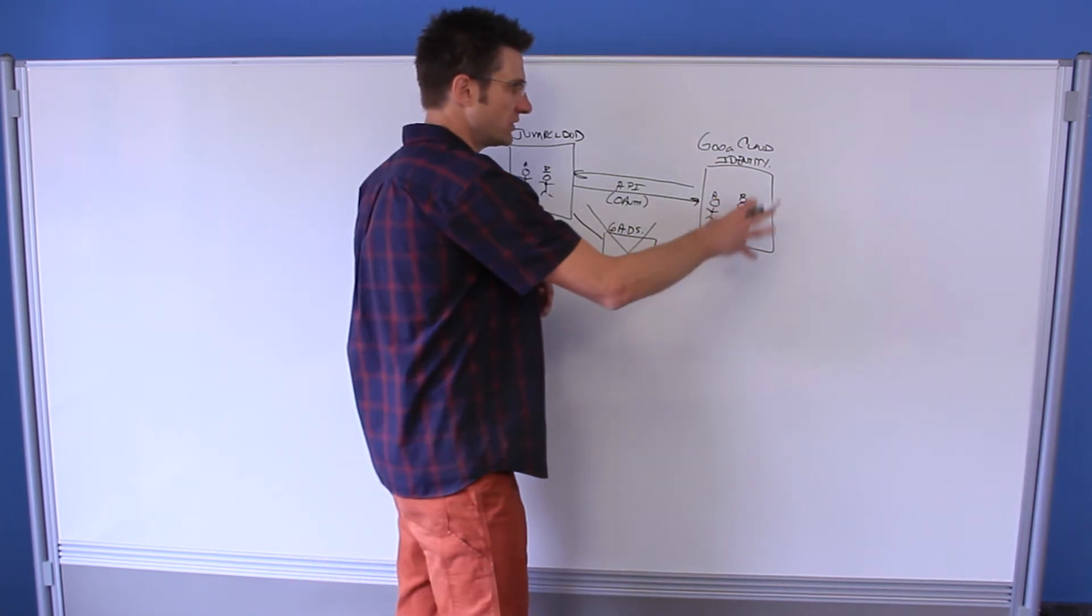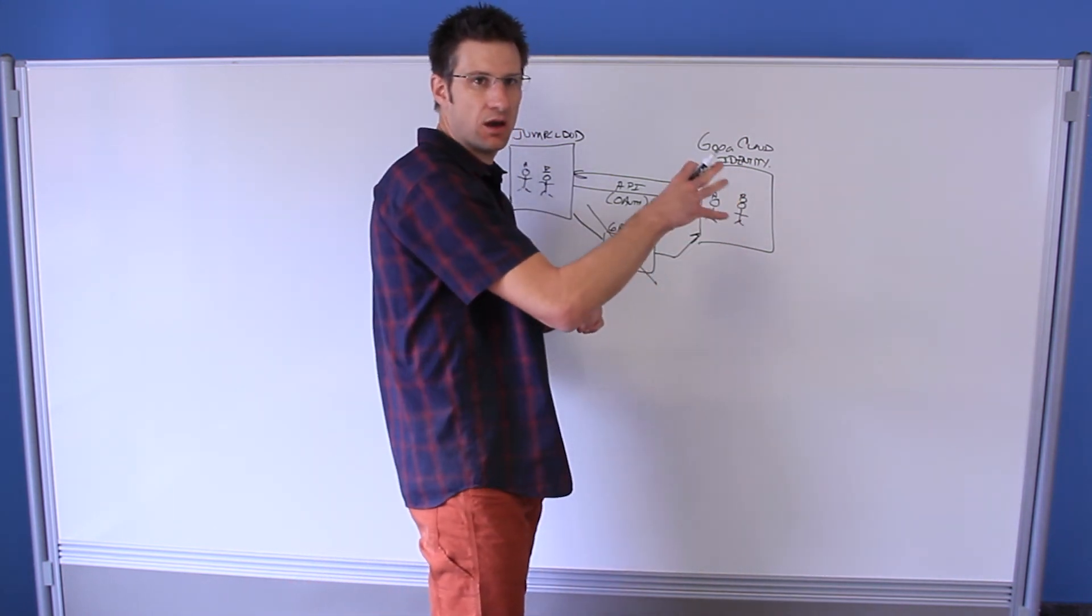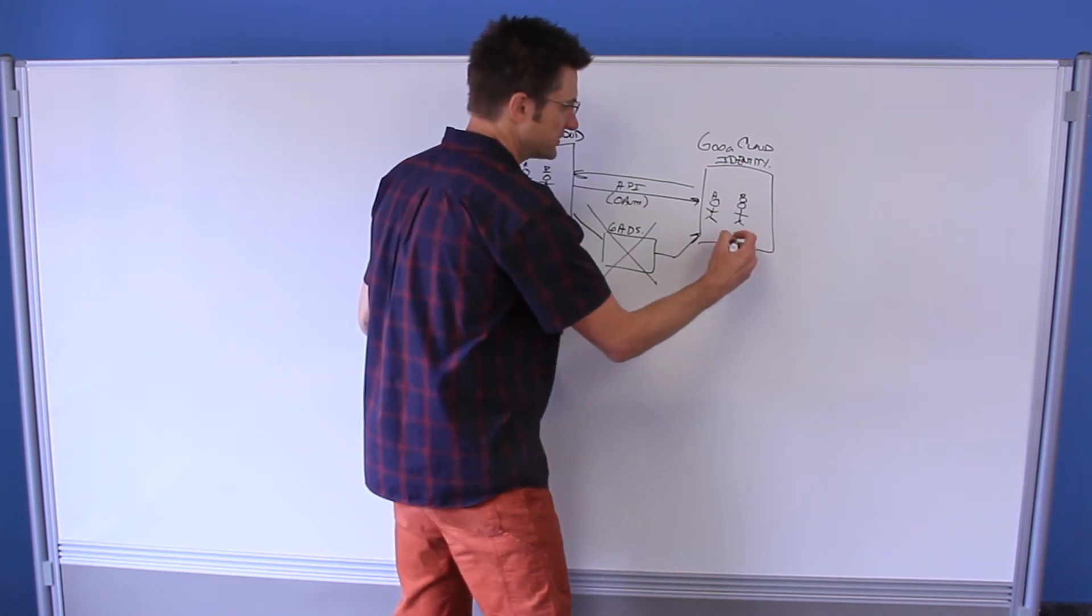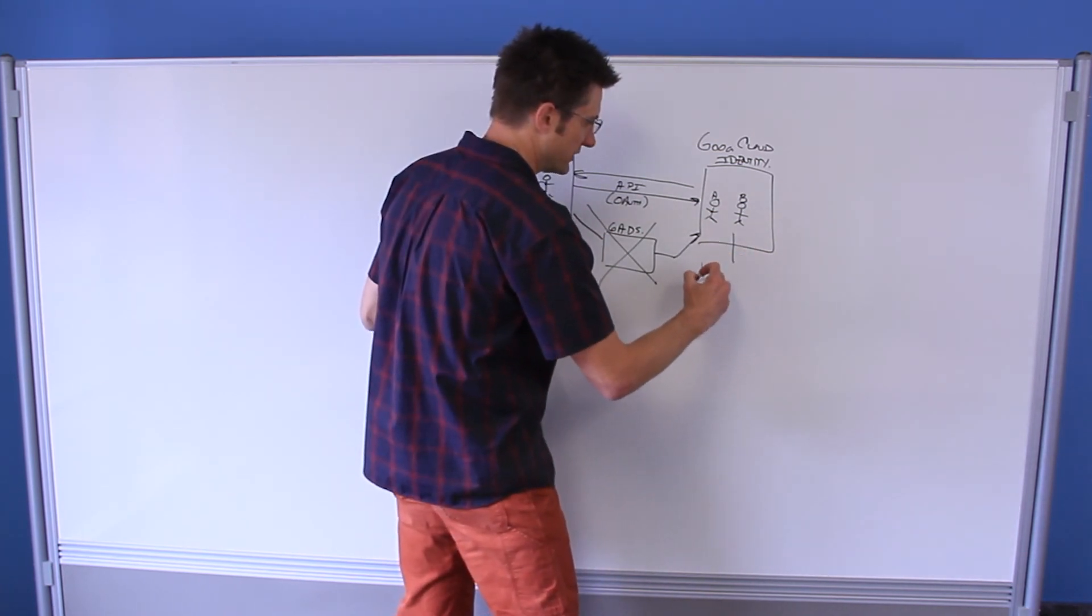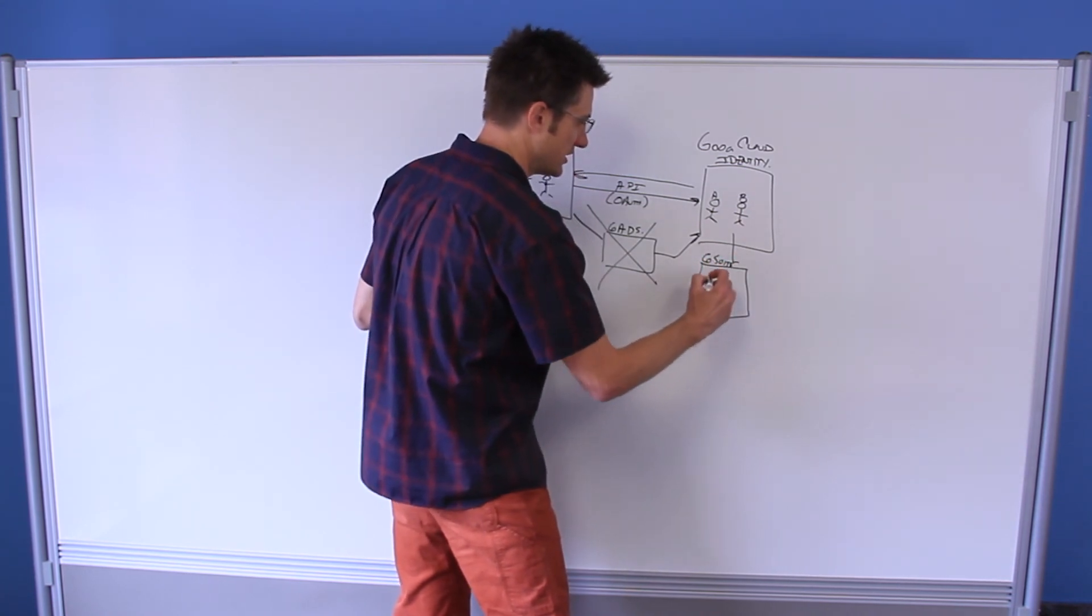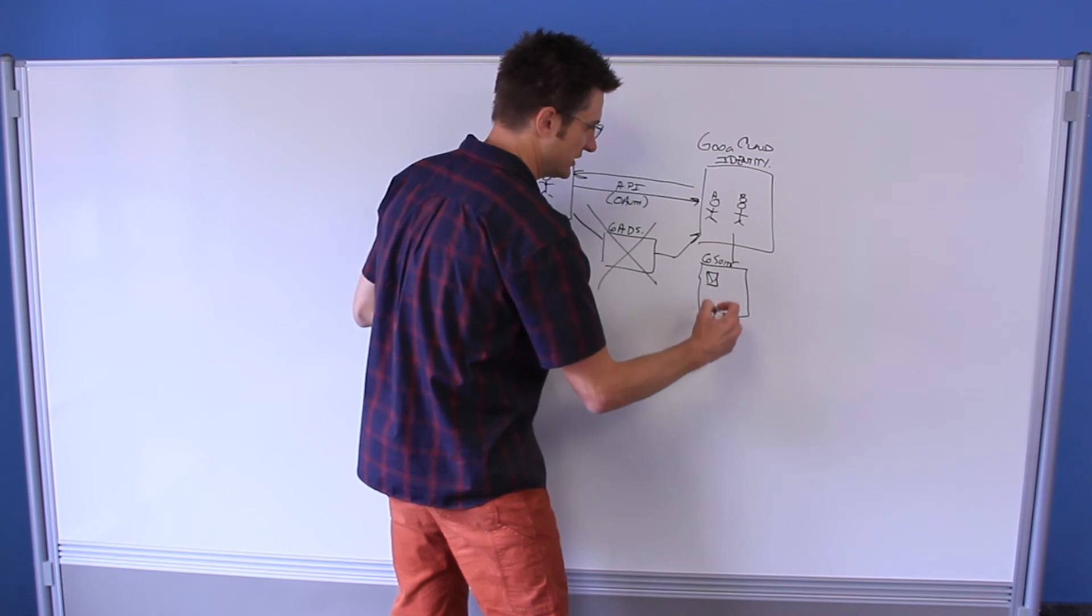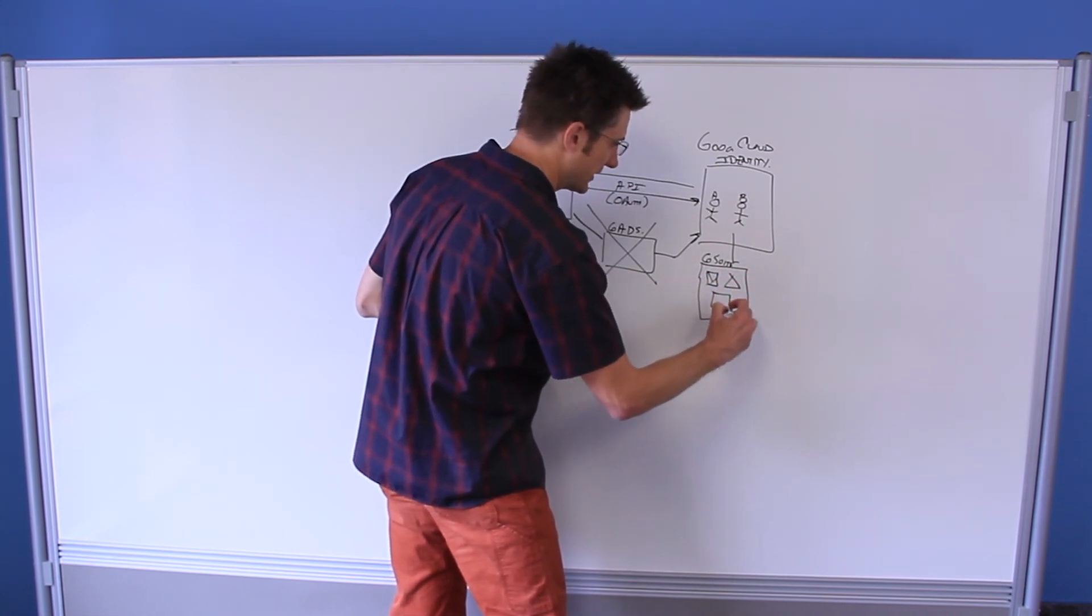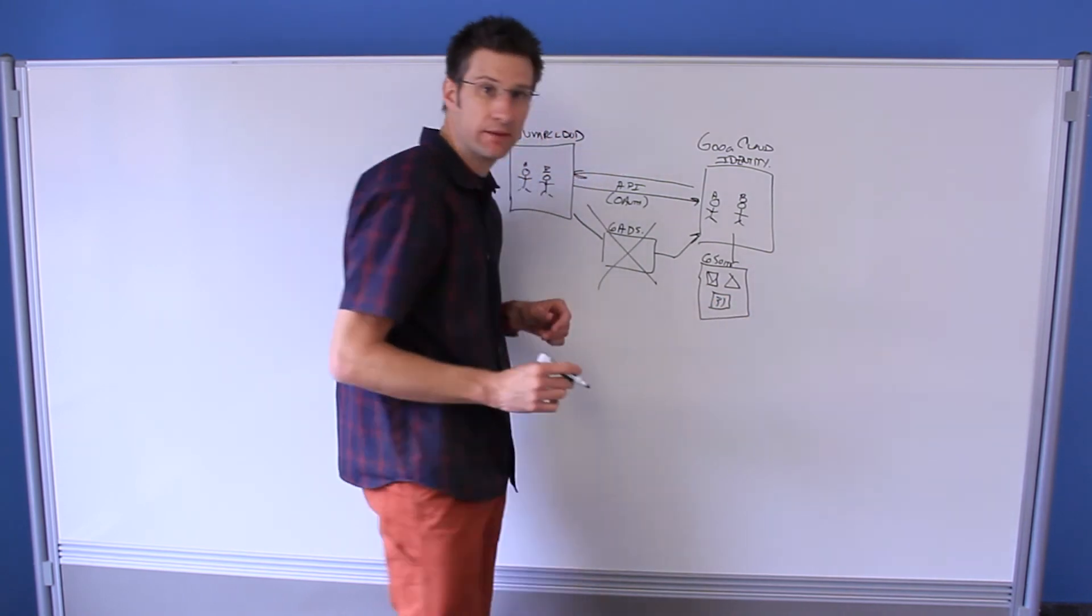As mentioned, once the cloud identities are input and laid in place within G Suite, it's up to you as the G Suite administrator to assign them to things, like to G Suite itself. So you give them things like Gmail, like Drive, like Calendar, and so on.